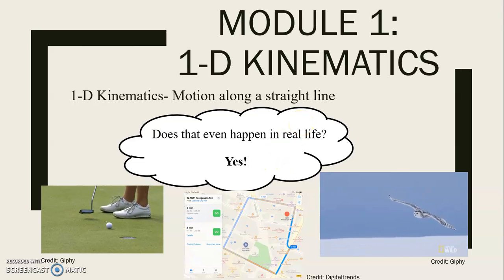And so that can be modeled as 1D kinematics, even though maybe they're not flying perfectly straight. We could still model their journey as they go from, say, Canada down to Florida. We could still model that trip, we could figure out how long it would take them, and their average speed, or whatever it is that we were interested in. So 1D kinematics is something that's happening all the time.